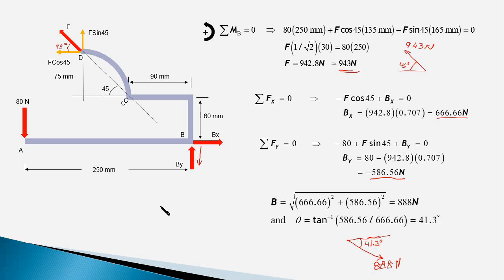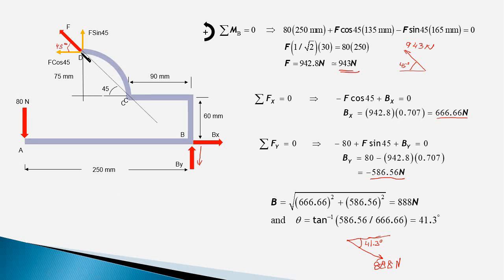We have now found both reaction forces at D and at B. This was possible by recognizing that member DC is a two-force member, which meant the reaction force at point D must be directed along the line joining points D and C.